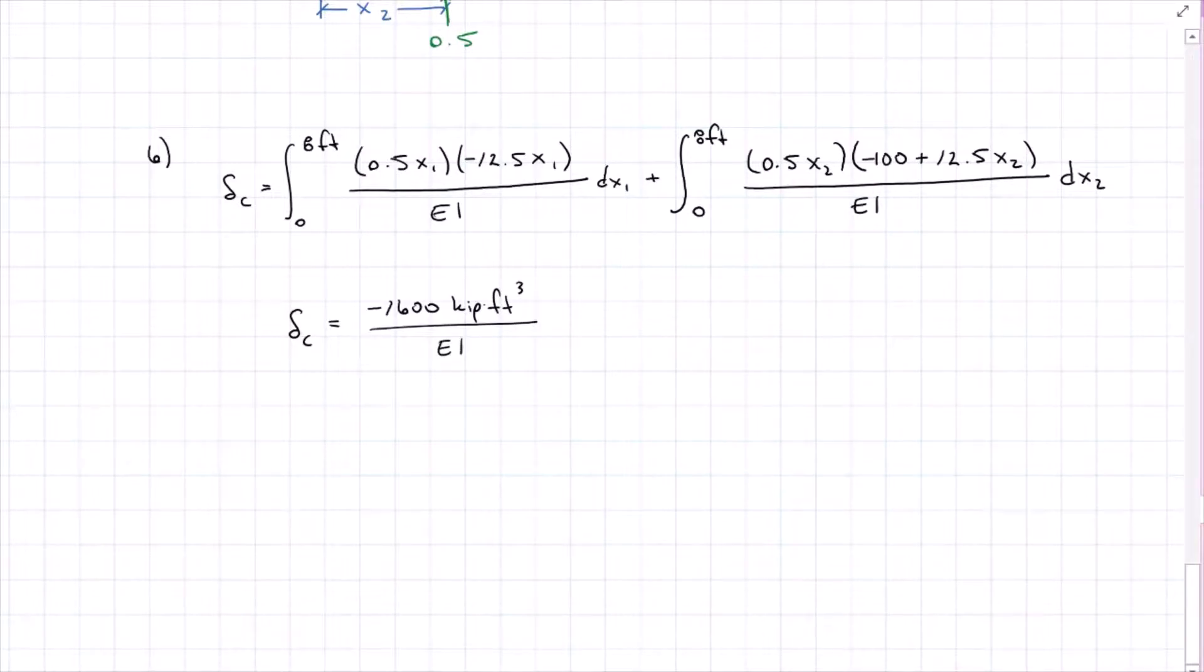We're going to find that our deflection at C is negative 1,600 kip feet cubed all over EI. That negative sign means that it's opposite of my assumed direction. I assumed that it would deflect down, so that means this is actually deflecting up, which, if you recall from the moment area method, is our assumed direction for the elastic curve.